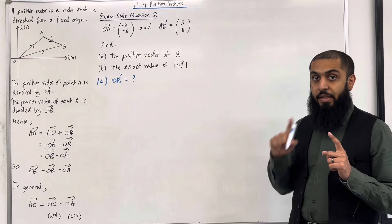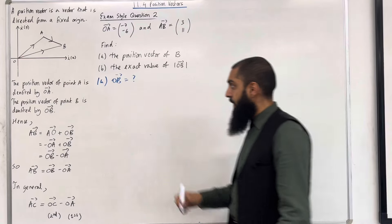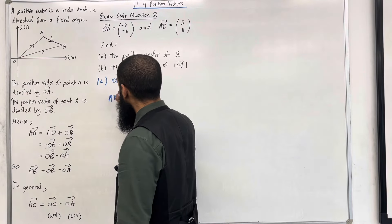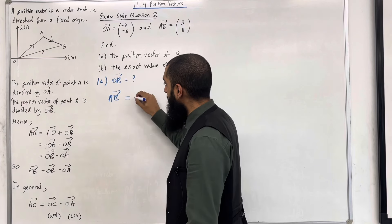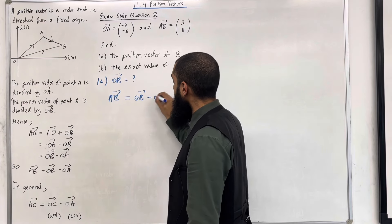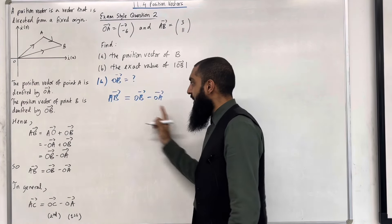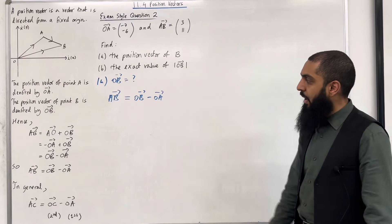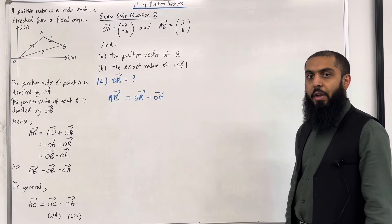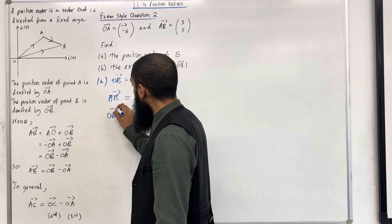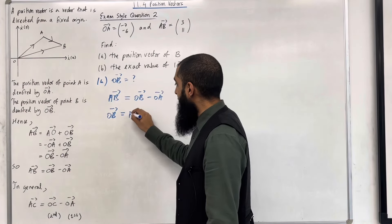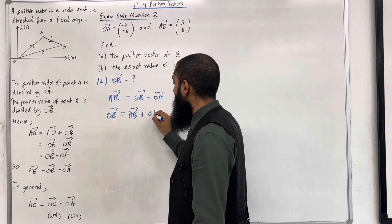Now for position vectors, I repeat, for position vectors, the vector A to B is given by 2nd minus 1st. So O to B minus O to A. This is only valid for position vectors. Now I'm going to rearrange this to make O to B the subject. So the vector O to B is therefore given by the vector A to B plus the vector O to A.